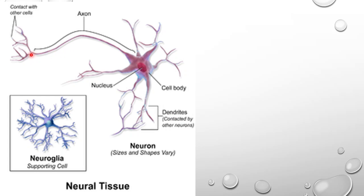There is an extended portion called the axon, which branches towards the tip into extended fibers. The endings of the axon are connected with the dendrites of another neuron — that is how they are interconnected, forming nerves. In between the neurons, there is a type of cell called neuroglia, which acts as the supporting cell and makes up more than one half of the volume of the neural tissue in our body. Neuroglia cells help to protect and support the neurons.